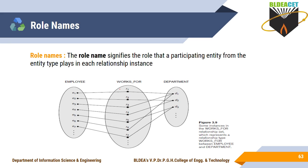Next is role name. A role name signifies the role that a participating entity from the entity type plays in each relationship instance. For 'Works For,' you understand that the employee works for the department. Role name is not compulsory, but it is good practice to name the relationship type based on the role it plays.